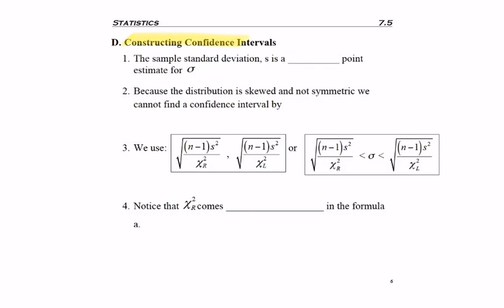Now let's talk about how to actually make that confidence interval. When we have our sample standard deviation, remember we use the symbol S, and it turns out it's actually a biased point estimate for sigma, the population standard deviation, but it's the best that we have.